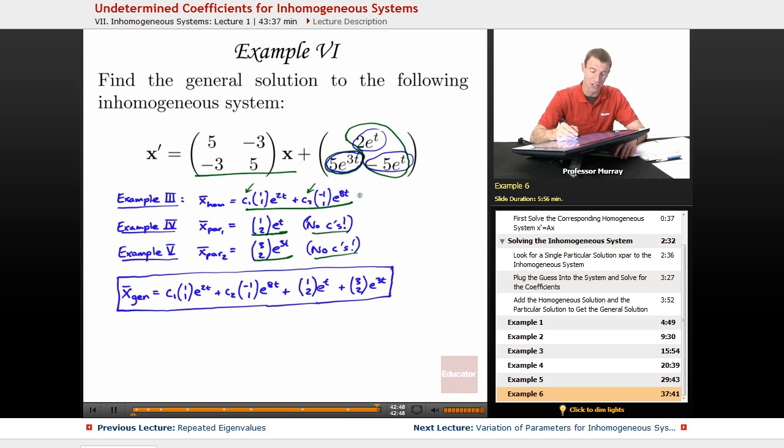And so after we do all that, all of this was in the previous examples, so you can go back and check those out to see where all these numbers came from. All we're doing in this example is just adding those together, just assembling the homogeneous solution, the first particular solution, and the second particular solution into one big solution to the inhomogeneous system.